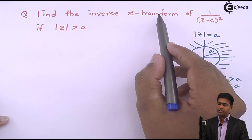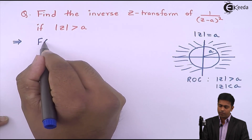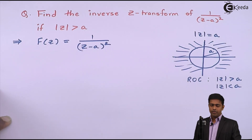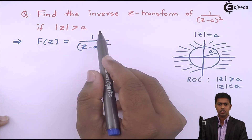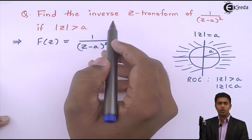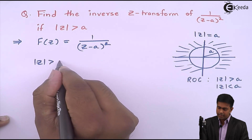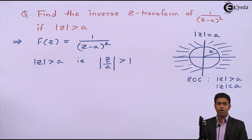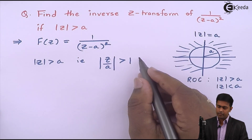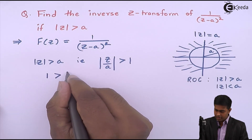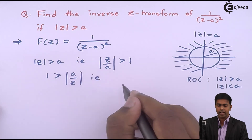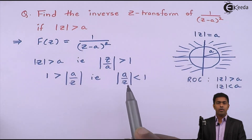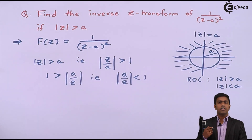As we want to find out the inverse Z transform of the given function, let F of Z equal 1 upon (Z minus A) the whole square. To find the inverse Z transform in this region of convergence, note that mod Z greater than A means mod Z by A is greater than 1, which means mod A by Z is less than 1. So if A by Z is less than 1, the Z transform exists.